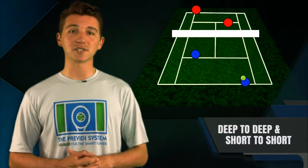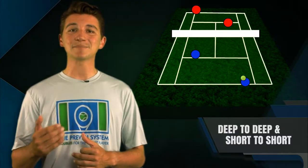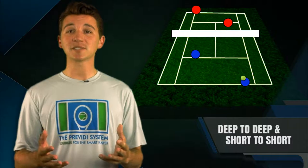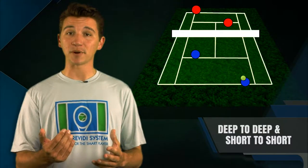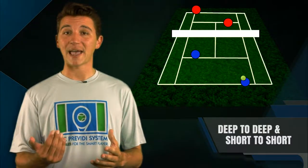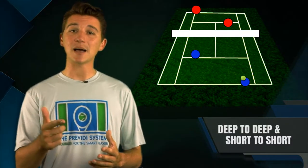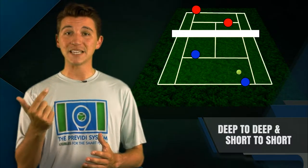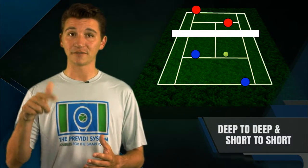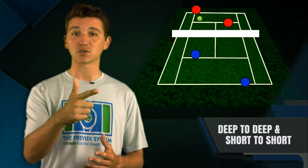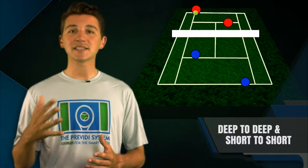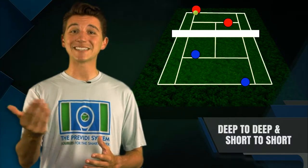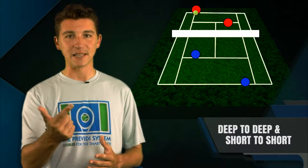One of the terms we use a lot is deep to deep or short to short. It describes a scenario where if I'm the helper and I'm further back, I'm going to look to set up my partner by hitting deep, myself, to the other team's deep, cross court. This is going to be the best way to avoid the opposing team's net player hurting us — deep to deep.